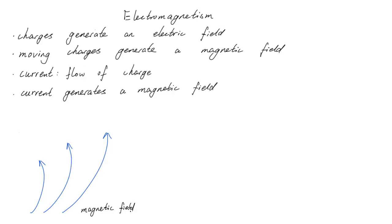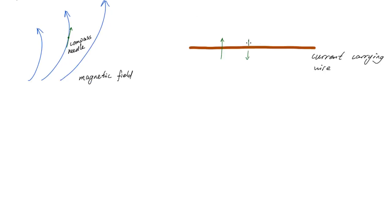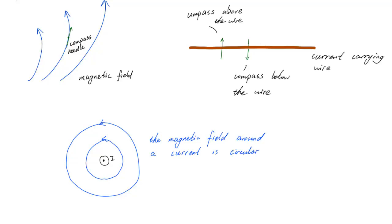Hans Christian Airstead demonstrated that a compass points tangential to the magnetic field at every point, and that it would point in opposite directions when placed on opposing sides of the current. Which is a fancy way of saying that the magnetic field is circular. We'll look at this magnetic field in later videos.